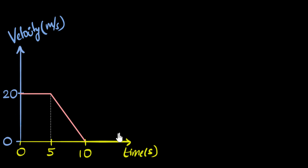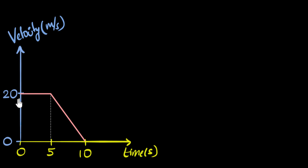We've seen velocity time graphs before. It's a graph that tells us the velocity of an object at any time — it's like looking at a speedometer. So imagine we had a speedometer attached to the baby. The graph says at time t equal to zero, the baby has a speed of 20 meters per second, already starting at 20 meters per second. And as time passes, the speed remains constant — it does not change — until five seconds.